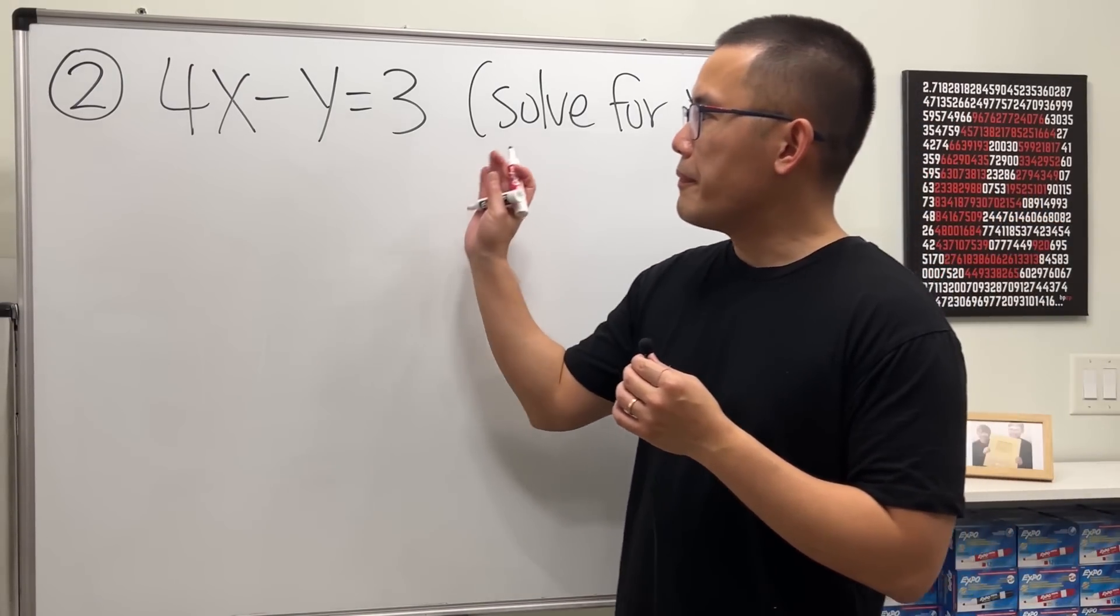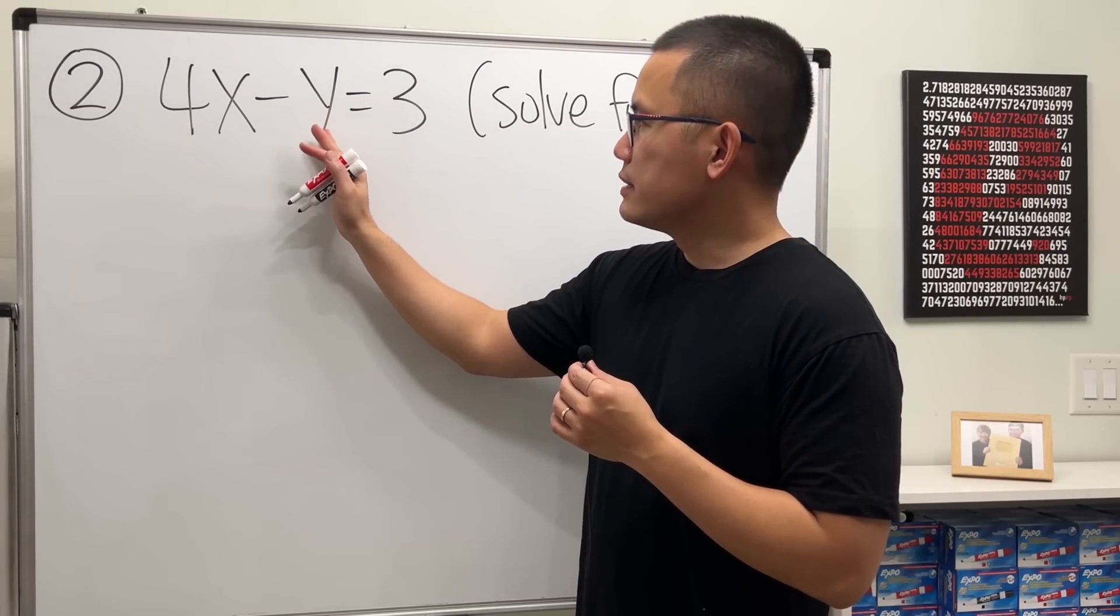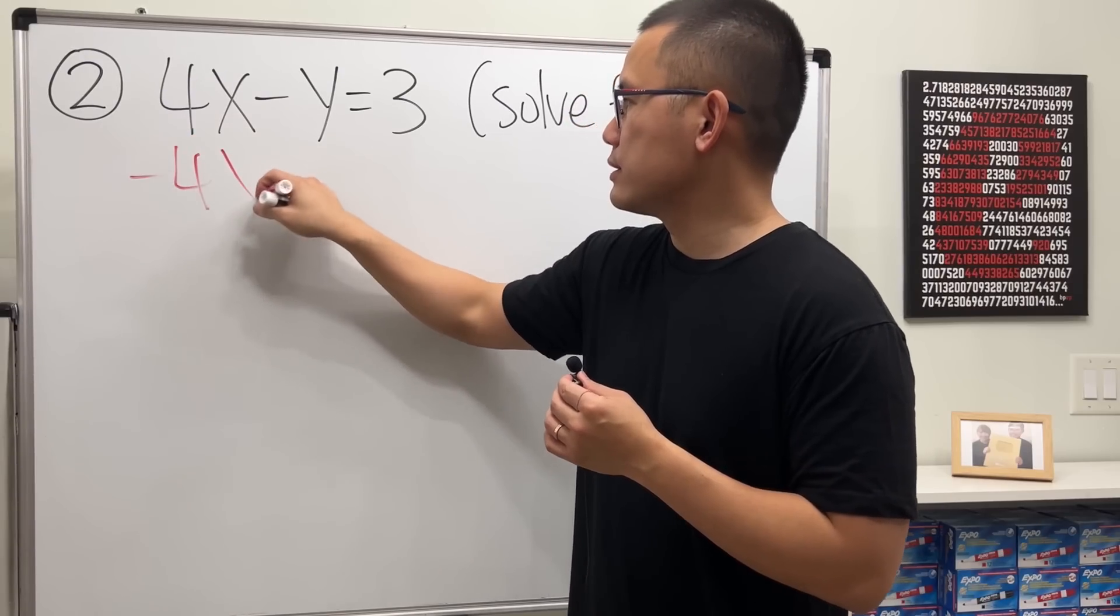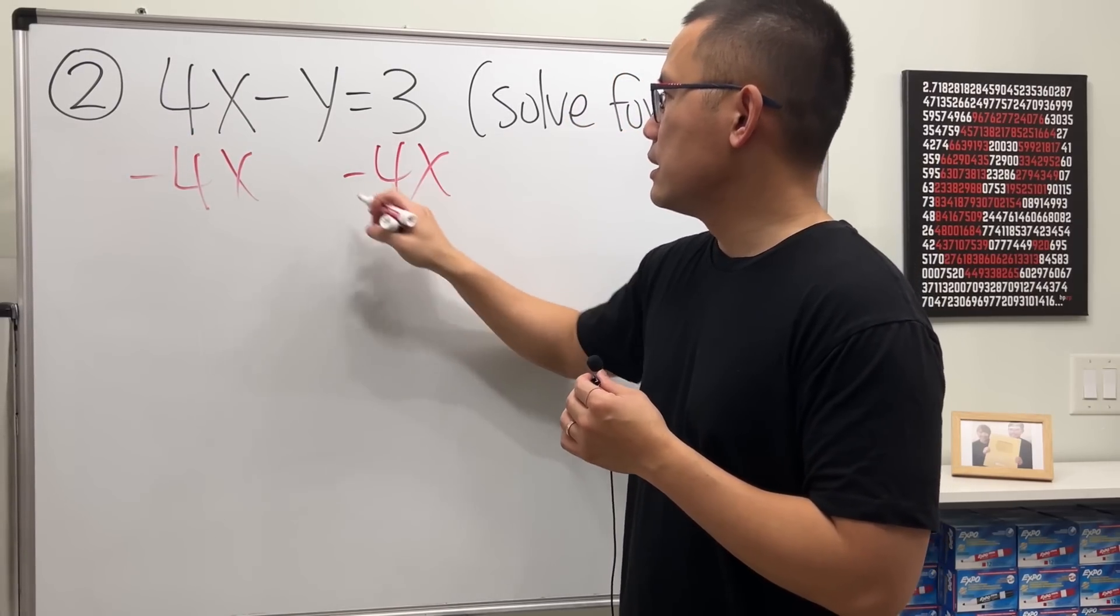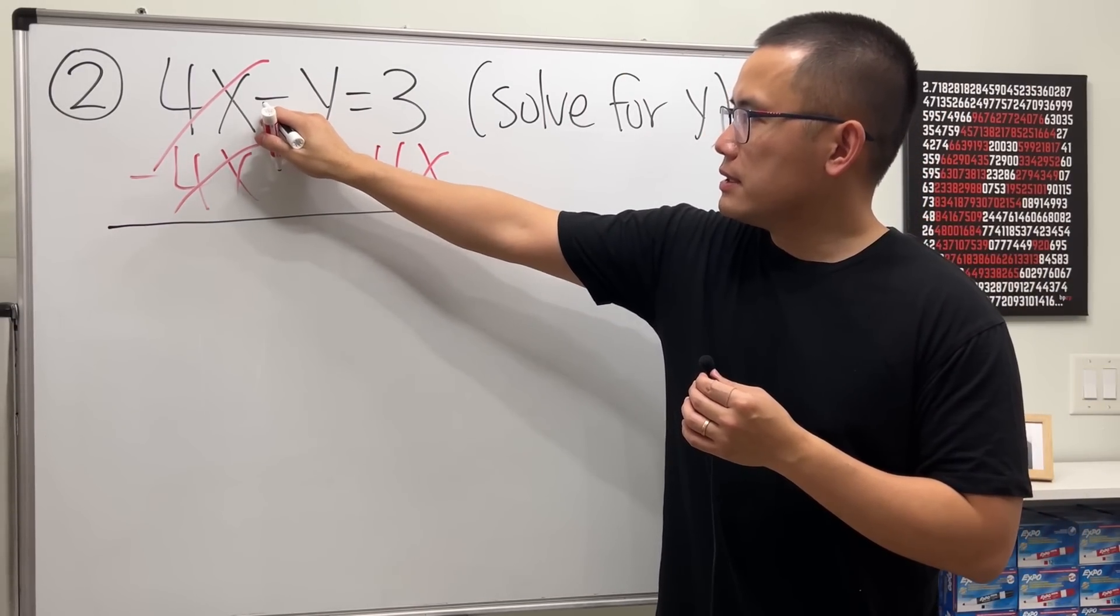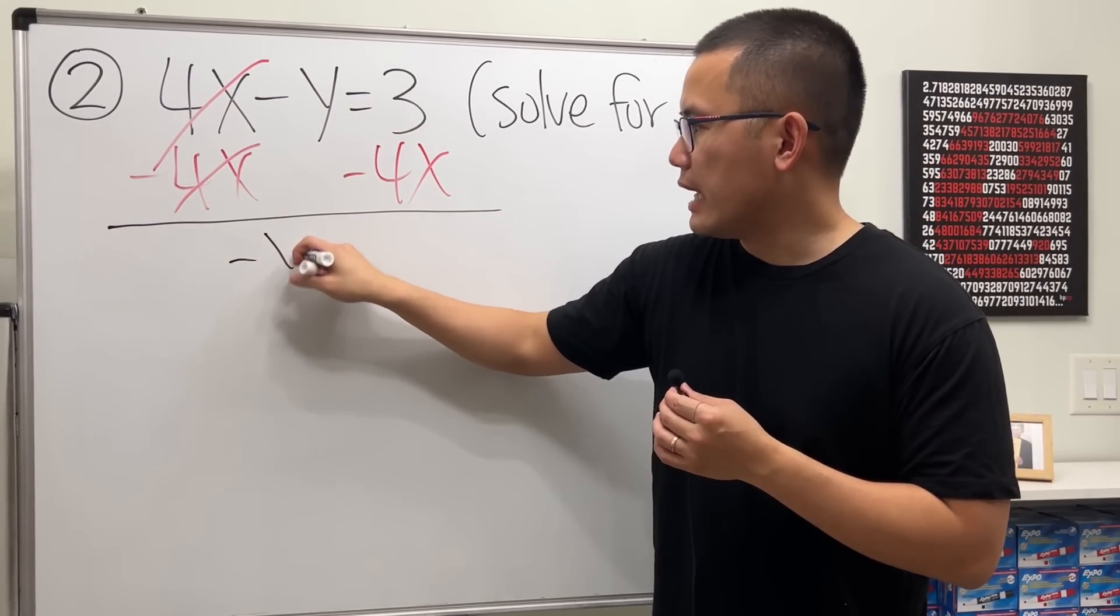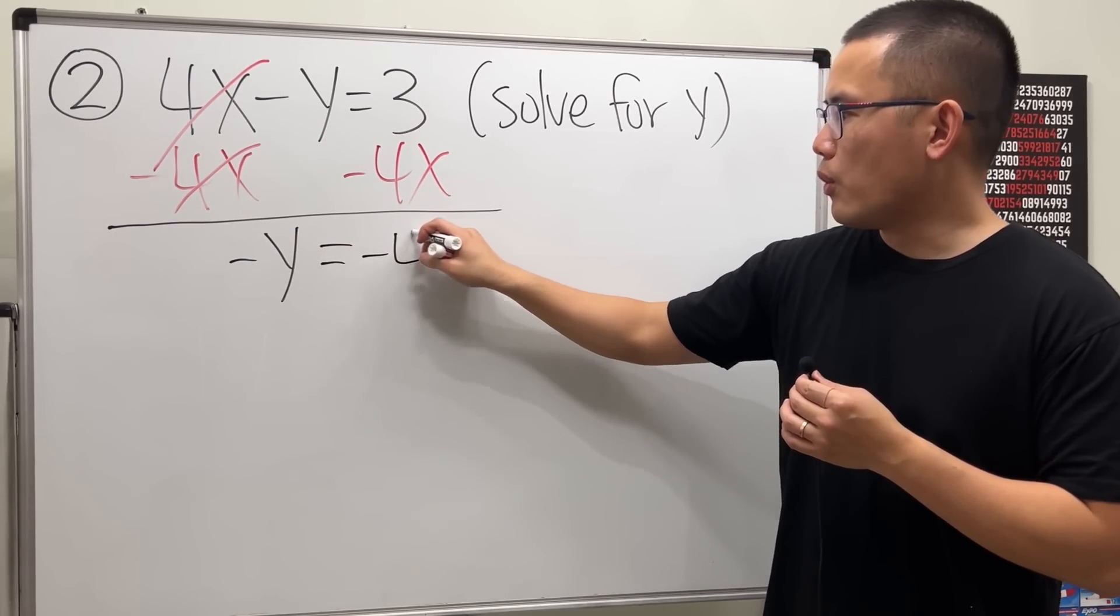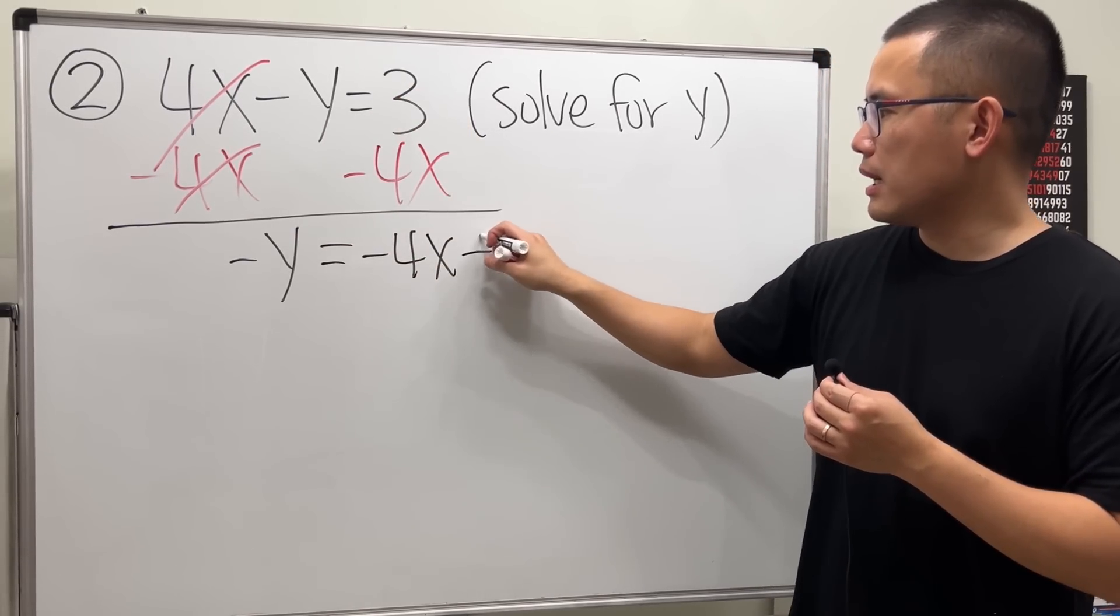Now for this one, same thing, solving for y. Here is the y. Let's get rid of the 4x, and we will have to subtract 4x to both sides. That way this and that can cancel. Keep in mind this is a minus y, so bring that down, and then this equals negative 4x and then that's a plus 3.